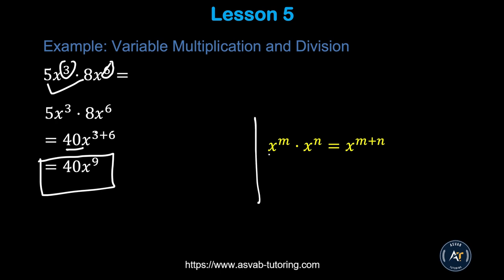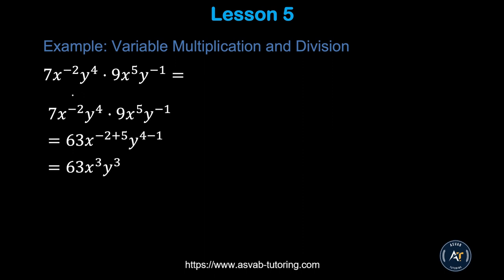The formula here: if x to the power m and x to the power n, and you are multiplying, you have to add the exponents. In this problem, we have 7x² y⁴ times 9x⁵ y⁻¹. First multiply the numbers: 7 times 9 is 63. Then x to the 2nd power times x to the 5th power — 2 plus 5 gives you x³. And y to the 4th times y to the negative 1 — 4 minus 1 gives you y³. So the answer is 63x³y³.